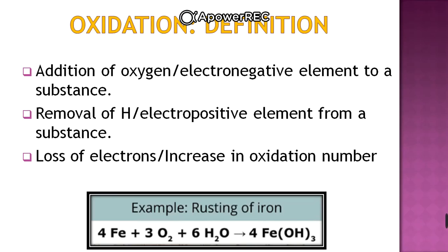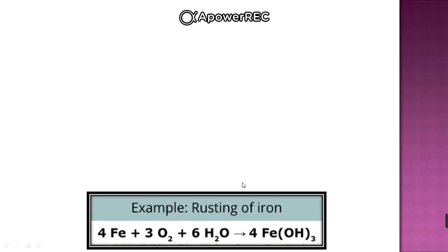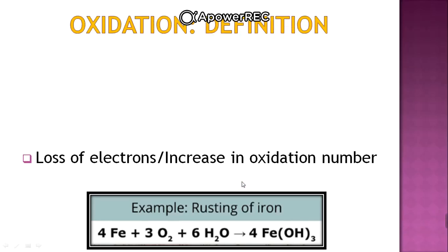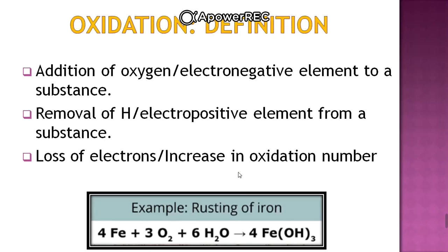If we want to define in terms of loss of electrons, loss of electrons is oxidation. We have learned both ways. As it is accompanied with a loss of electrons, we sometimes call it as de-electronation.